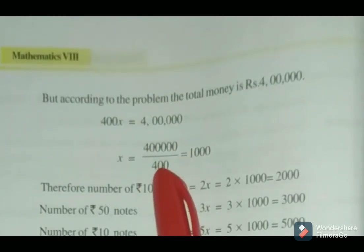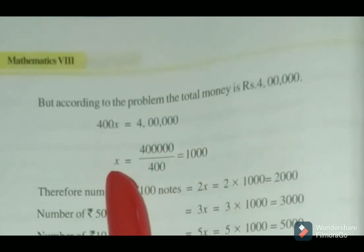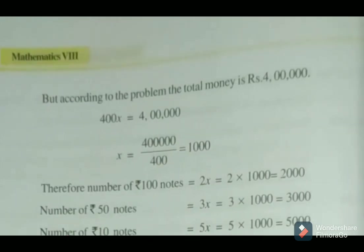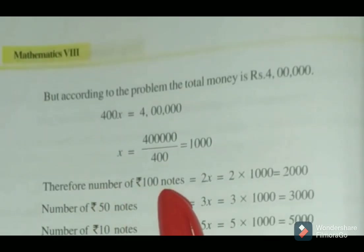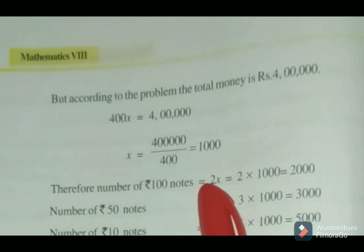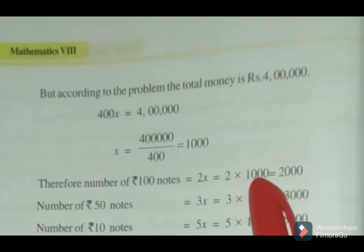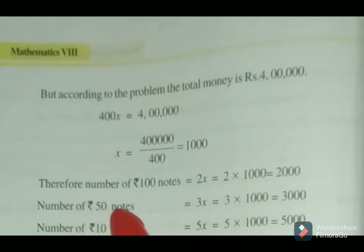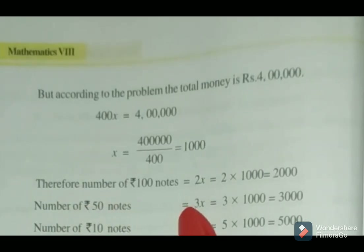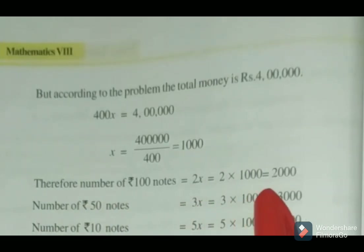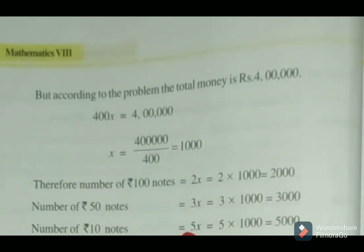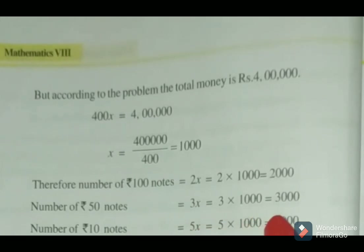400X is equal to 4,00,000. So common factor X equals 1000. Therefore the number of 100 rupee notes is 2X equals 2 into 1000 equals 2000. The number of 50 rupee notes is 3X equals 3 into 1000 equals 3000. The number of 10 rupee notes is 5X equals 5 into 1000 equals 5000.